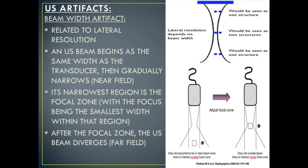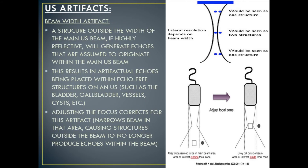Beam width artifact is related to lateral resolution. An ultrasound beam begins as the same width as the transducer and then gradually narrows in the near field. Its narrowest region is the focal zone, with the focus being the smallest width within that region. After the focal zone, the ultrasound beam diverges — this is known as the far field. A highly reflective structure outside the width of the main ultrasound beam will generate echoes assumed to originate within the main beam, resulting in artifactual echoes within echo-free structures such as the bladder, gallbladder, vessels, and cysts. Adjusting the focus corrects for this artifact by narrowing the beam in that area.